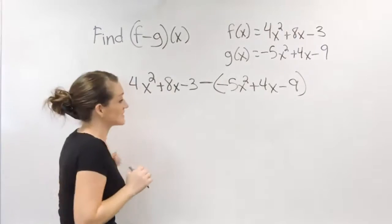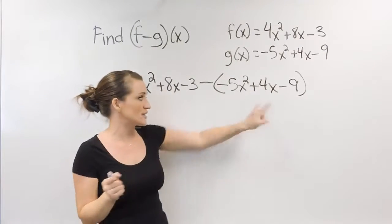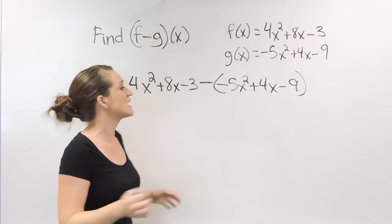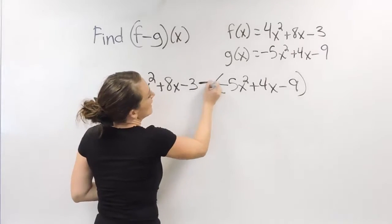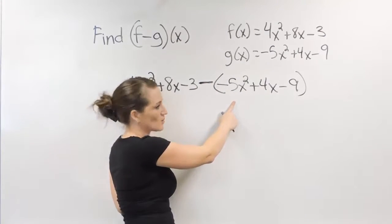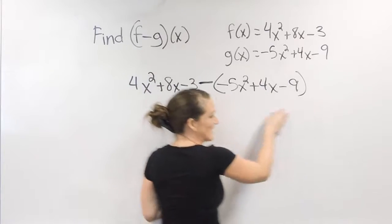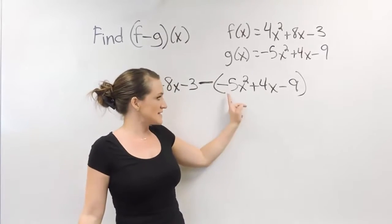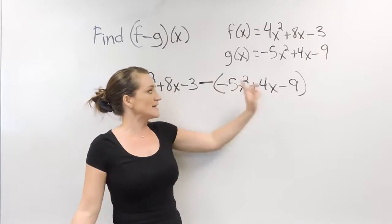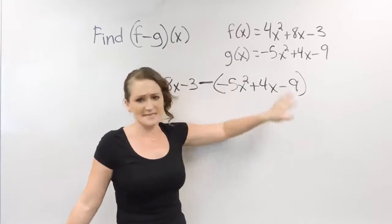Now when you are subtracting these together, it is very important that you put the second one in parentheses. That way you understand we're not just subtracting this -5x². We're subtracting this entire thing: minus the -5x², minus the 4x, minus the -9.